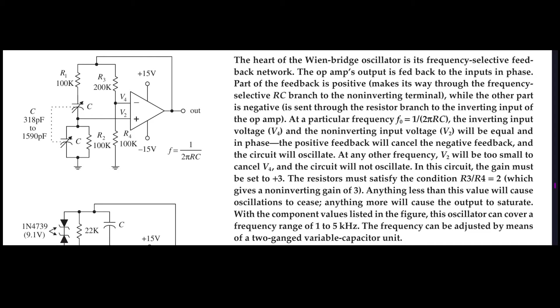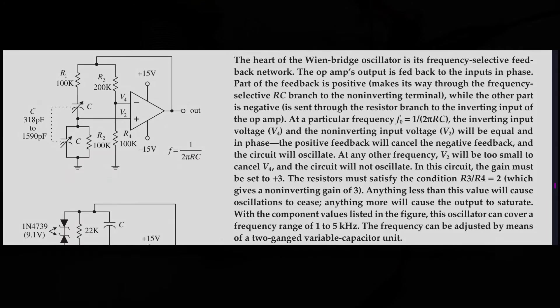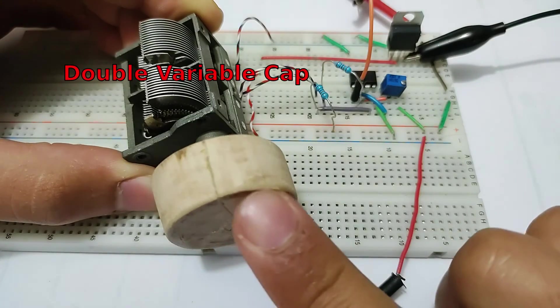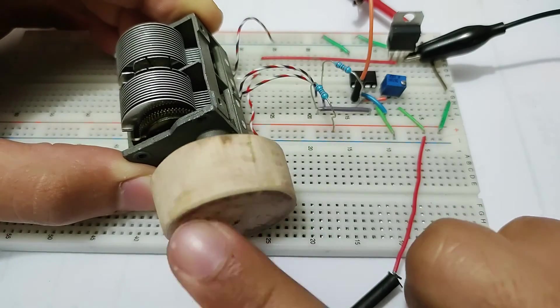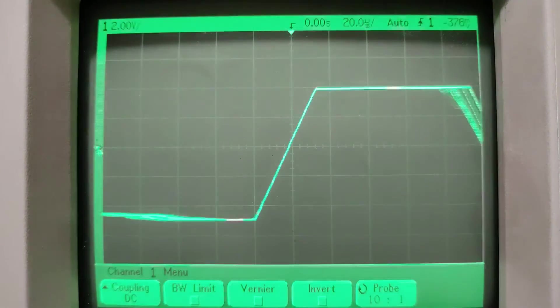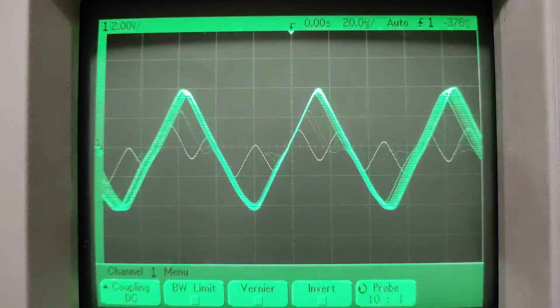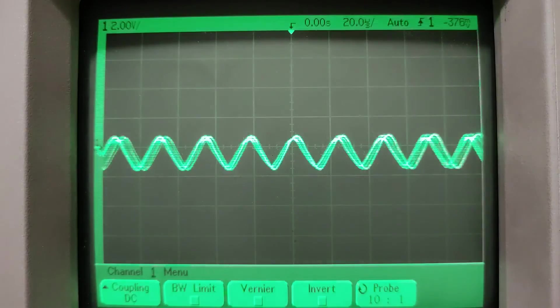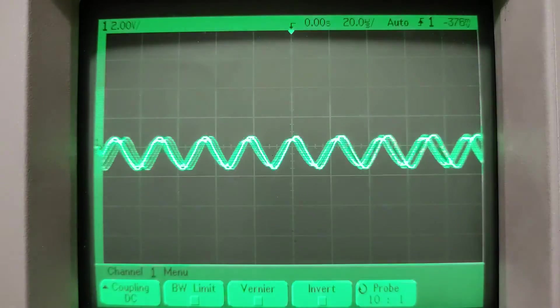The problem with this is that not only the frequency changes but also the attenuation of the filter. This means that the oscillator is very unstable and either stops oscillating when you increase the frequency or clips like crazy when you decrease it. So I decided to avoid this part and just try to make it stable and functional.